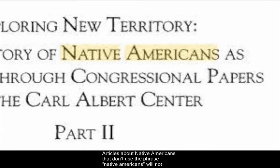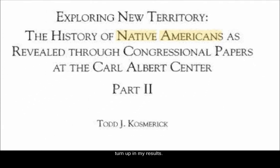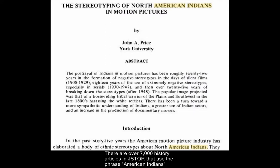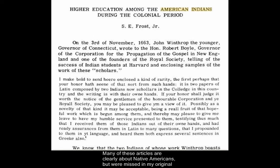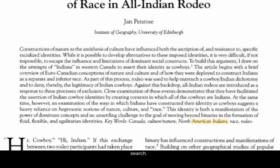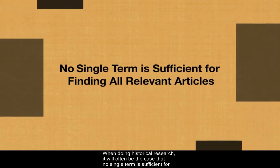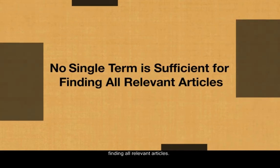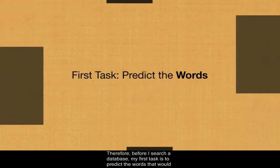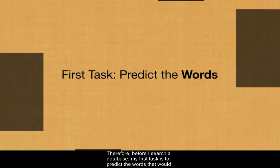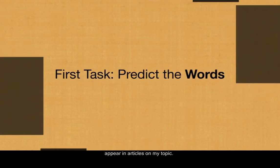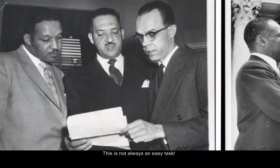Articles about Native Americans that don't use the phrase Native Americans will not turn up in my results. There are over 7,000 history articles in JSTOR that use the phrase American Indians, but not the phrase Native Americans. Many of these articles are clearly about Native Americans, but were missed in my original search. When doing historical research, it will often be the case that no single term is sufficient for finding all relevant articles. Therefore, before I search a database, my first task is to predict the words that would appear in articles on my topic. This is not always an easy task.